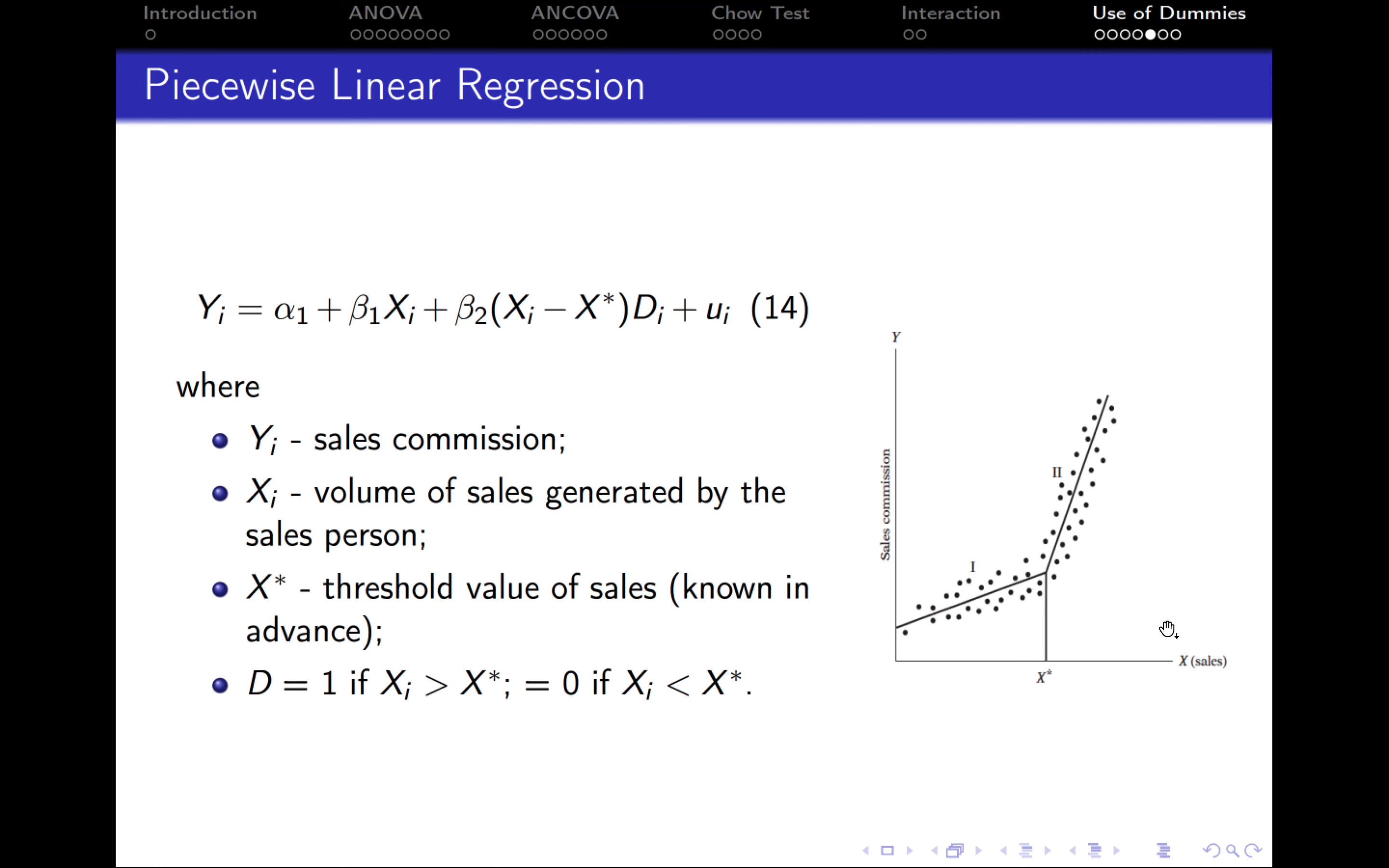This is how this model looks on the graph. Up to the target level, the regression line is flatter with one slope. After the target level, it becomes steeper with a higher slope.